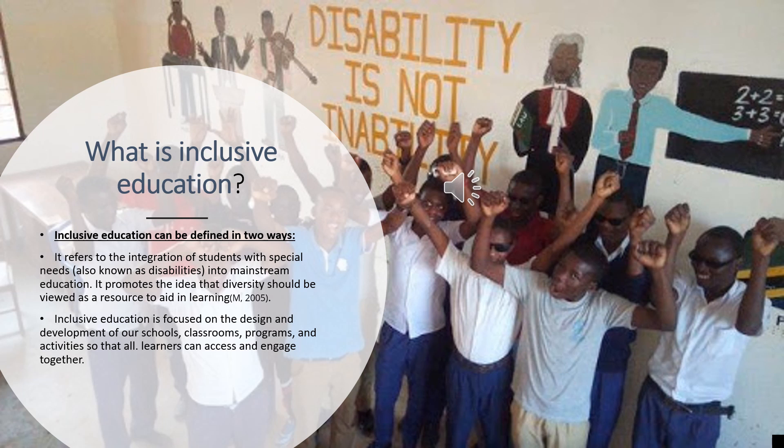Inclusive education alludes to the joining of students with extraordinary necessities, otherwise known as disabilities, into standard schooling. It advances that variety ought to be seen as a resource to help with learning. Comprehensive instruction is centered on the plan and advancement of our schools, classrooms, programs and lessons so all students can access and connect together.